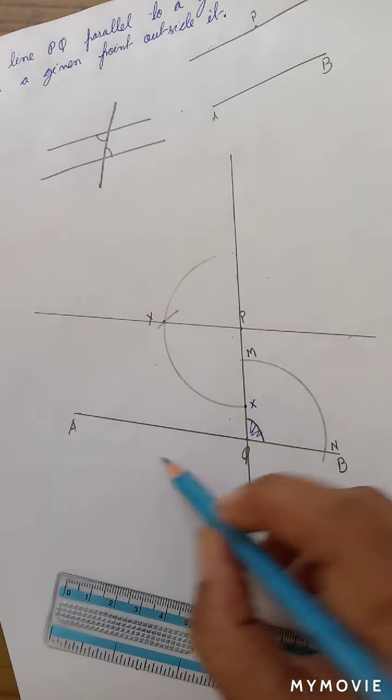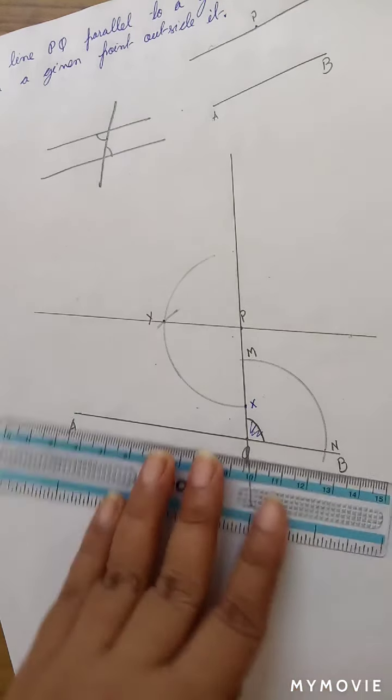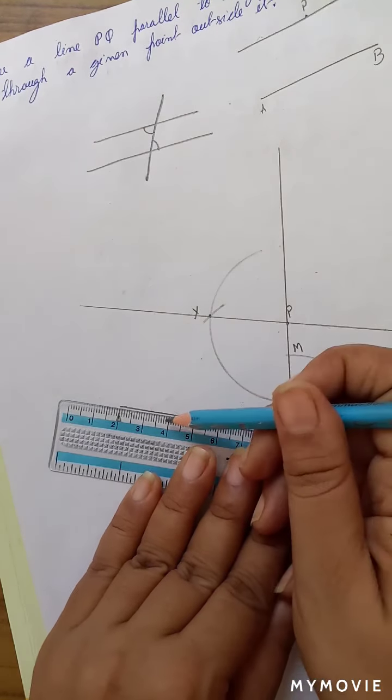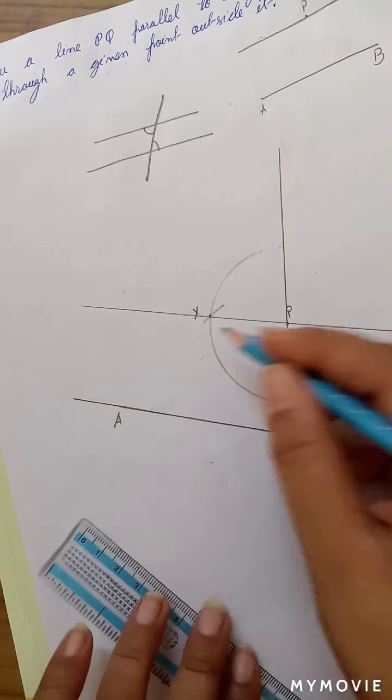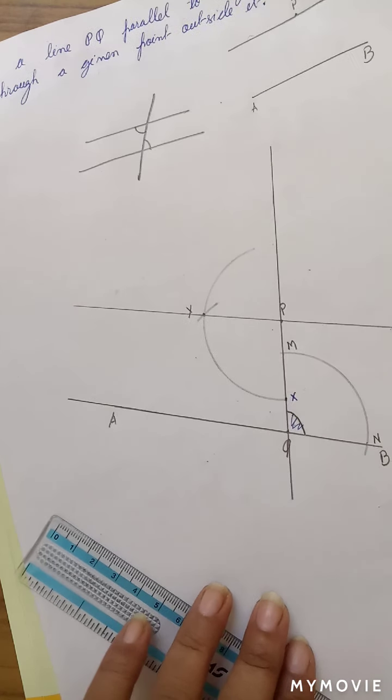And we have got line AB parallel to YP. You can extend it further in order to verify. These two lines will never meet. So, YP is actually parallel to AB.